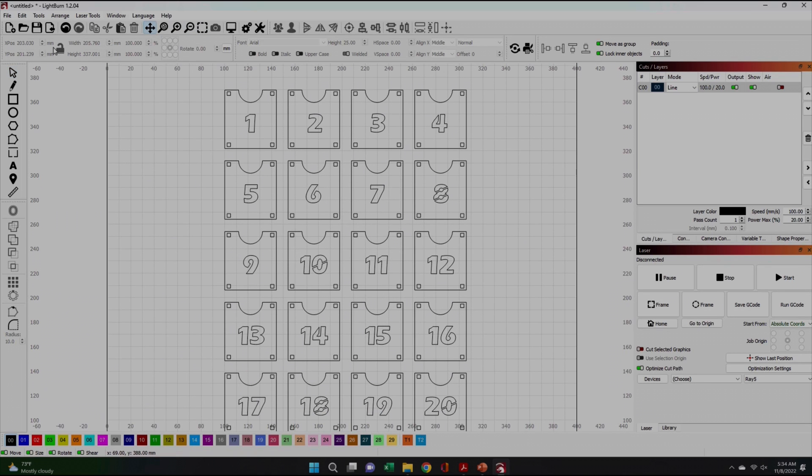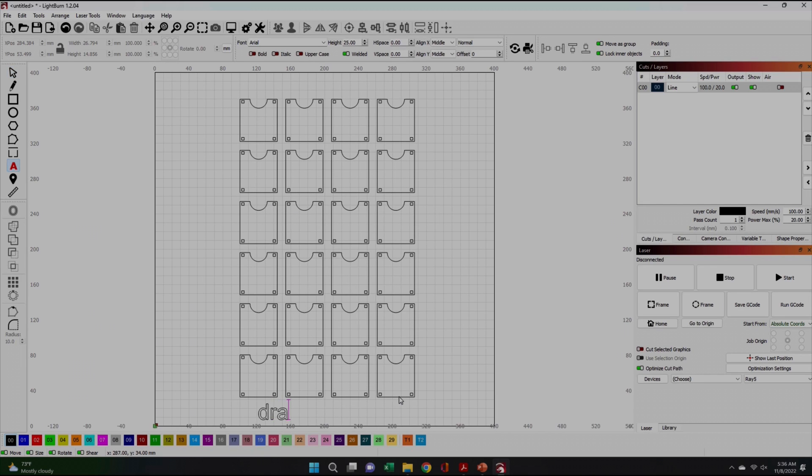We planned to make the calendar dates out of gold vinyl instead of having them cut out of the drawer faces. Removing the number cut paths from the drawer faces was as easy as highlighting and deleting them. Lastly, I added a label so I wouldn't cut something twice or accidentally miss parts.